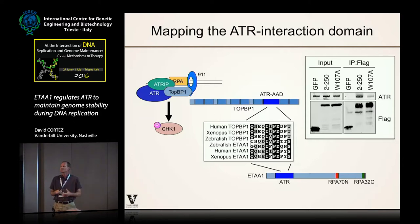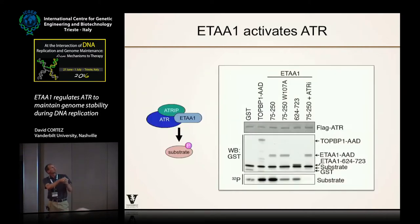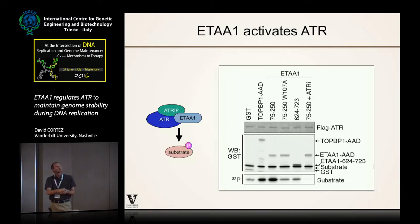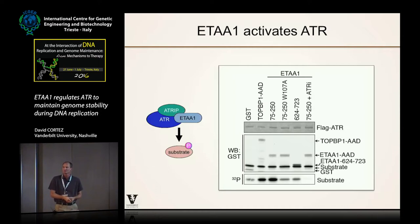We then asked whether ETAA1 is also capable of directly activating ATR in vitro, and the answer is yes. In a simple kinase assay, we purify ATR-ATRIP complex and incubate it with GST as a control — you see basal kinase activity. If we incubate with the ATR activation domain of TopBP1, you see stimulation of kinase activity. If we incubate with an internal fragment of ETAA1, we see robust activation as well. If we mutate the tryptophan to alanine, we lose activation. A different fragment of ETAA1 doesn't activate, and all activity is ATR-dependent — an ATR-specific inhibitor abolishes it all.